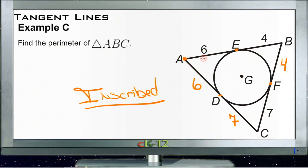The perimeter is the distance around the outside. So we just need to add these up. Six plus four is 10. Plus four is 14. Plus seven would be 21. Plus seven would be 28. Plus six would be 34.